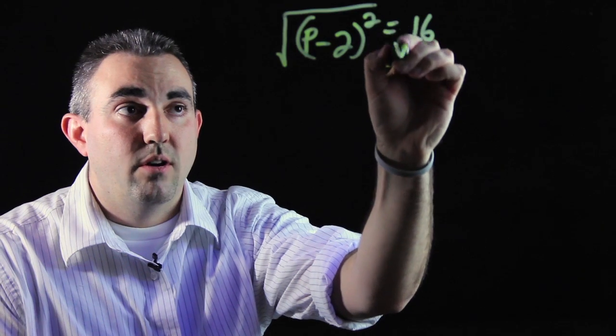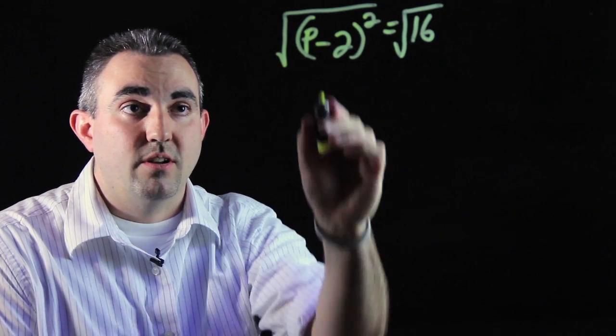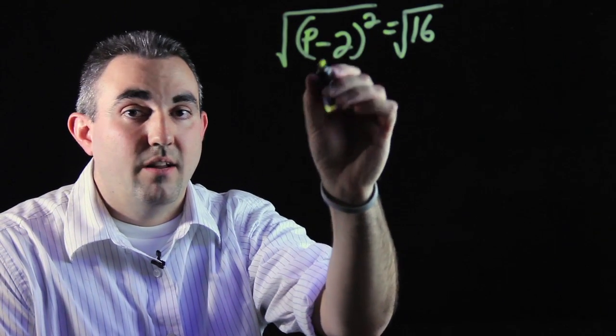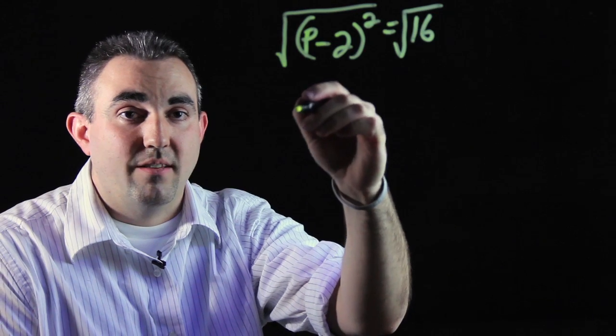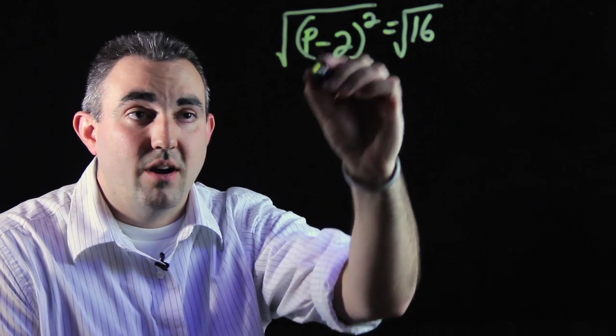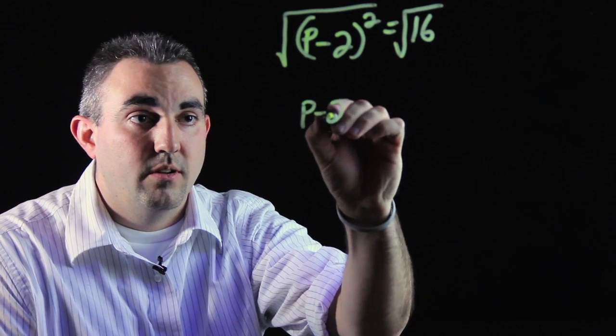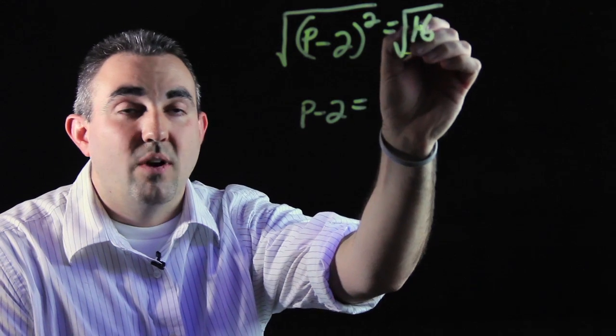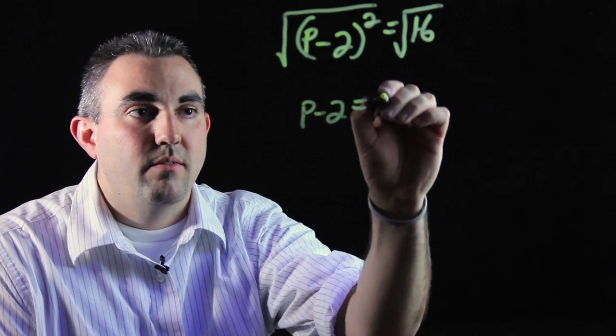So what you do is you take the square root of both sides of the equation. p minus 2 squared, how do we get that? What times itself gives us p minus 2 squared? Just p minus 2. That's going to equal what times itself gives us 16? 4.